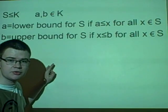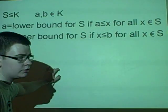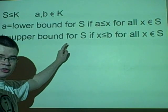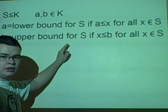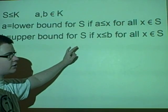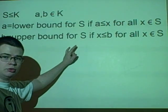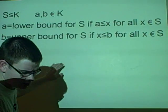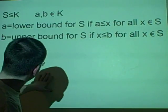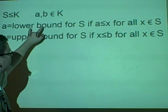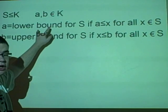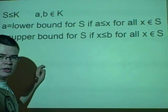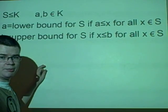This is similar for an upper bound, which we're calling B. B, or anything more, is known as an upper bound if it is greater than or equal to all the values in S. And if a set has both a lower bound and an upper bound, it is known to be bounded.